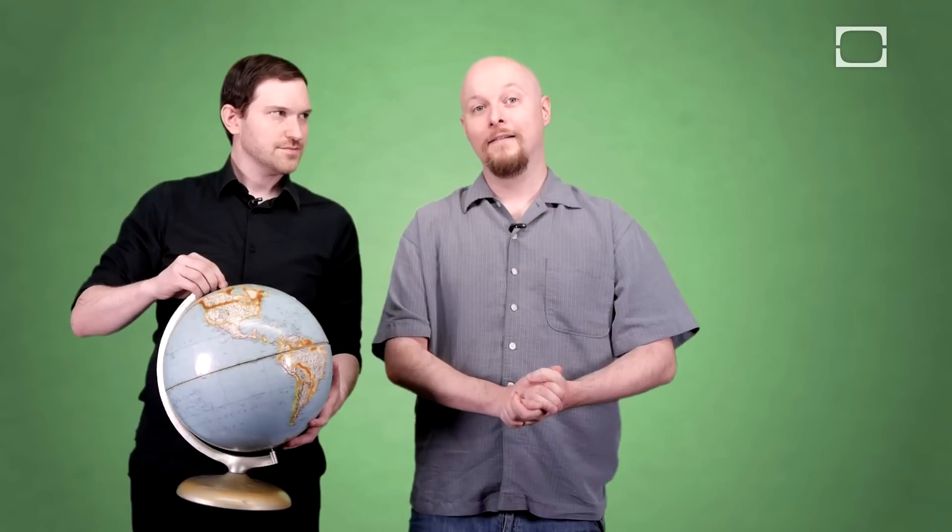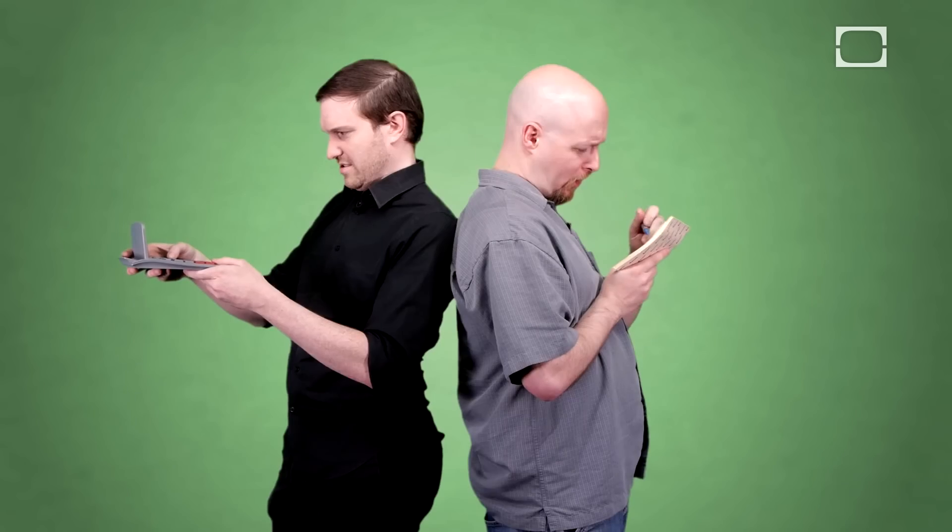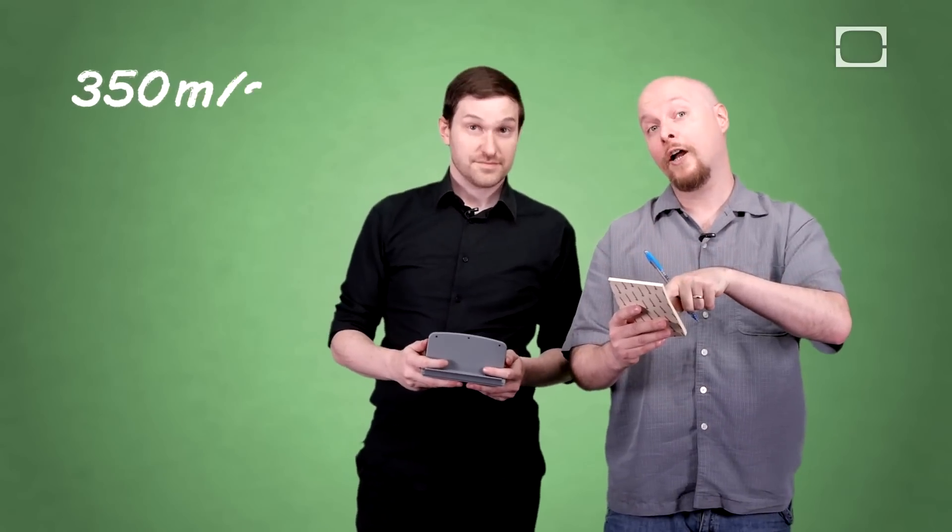So a mile is about 1.6 kilometers. Now it's important for us to figure out how quickly sound travels by meters per second. About 350 meters per second. So that means it's about three seconds for sound to travel one kilometer. So instead of dividing by five, we would divide by three.